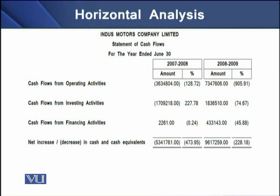Similar trend can be checked for the cash flow statement. On the screen, you can see the net cash flows from each section of the cash flow statement. In terms of operating activities, net cash flows from operating activities significantly declined. For 2008, there had been a huge decline in net cash flows from operations by 128.72%. In terms of net increase or decrease in cash and cash equivalents for 2008, there had been a decline by 473% over the period of one year.